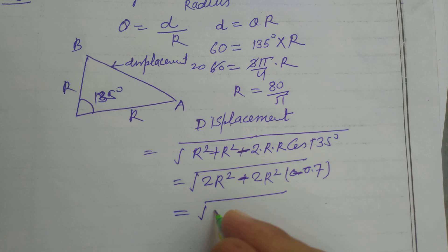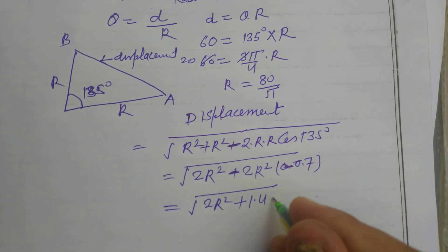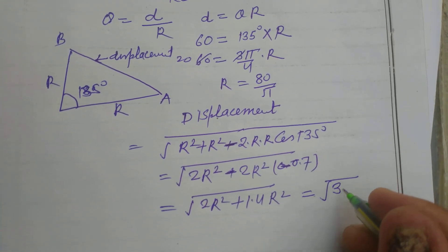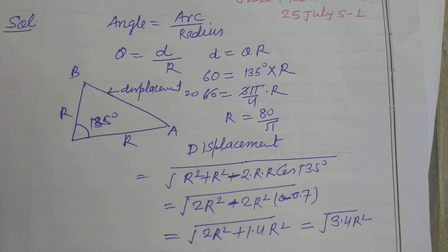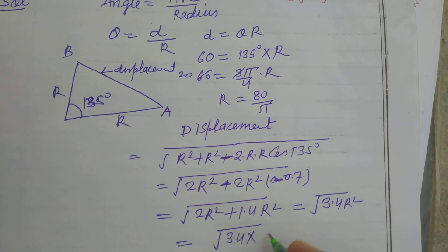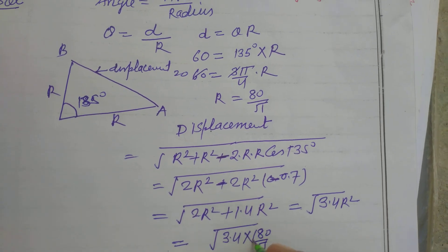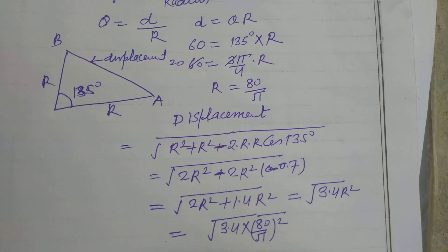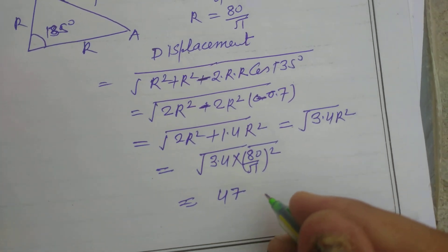So 2 R square minus 1.4 R square, and this will become under root 0.6 R square. And we put the value of R here, 0.6 into 80 upon pi whole square. We got this calculation equivalent to 47 meter.